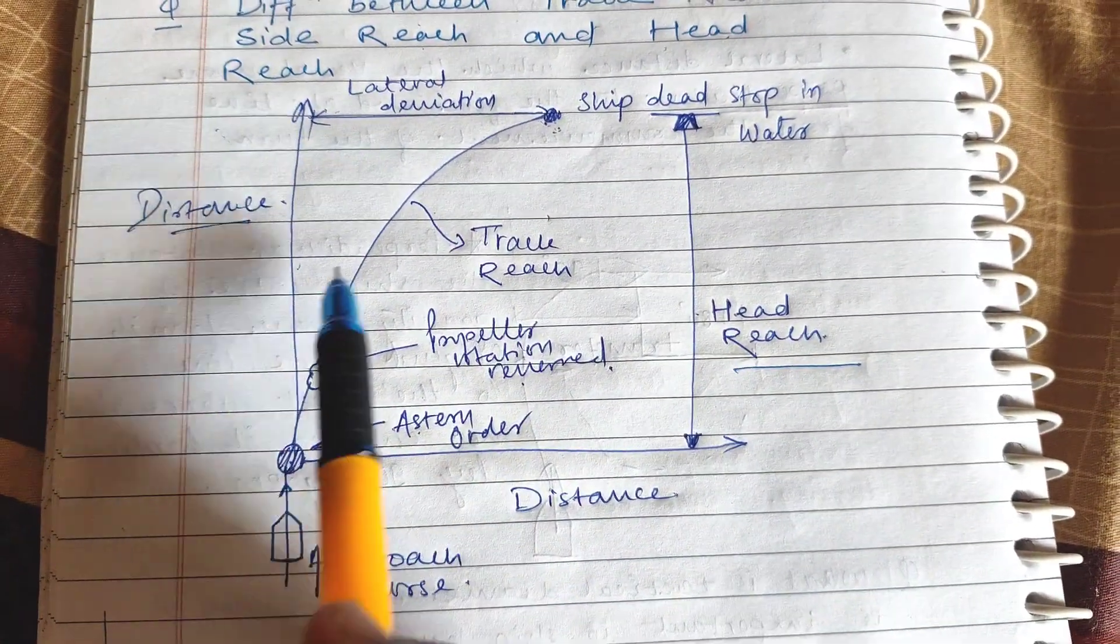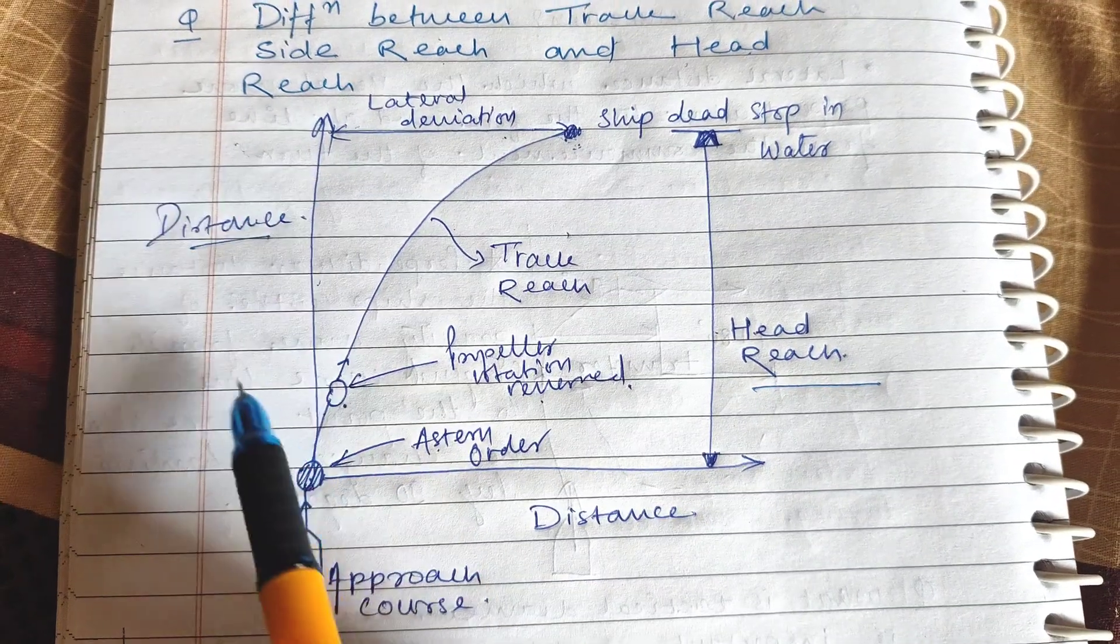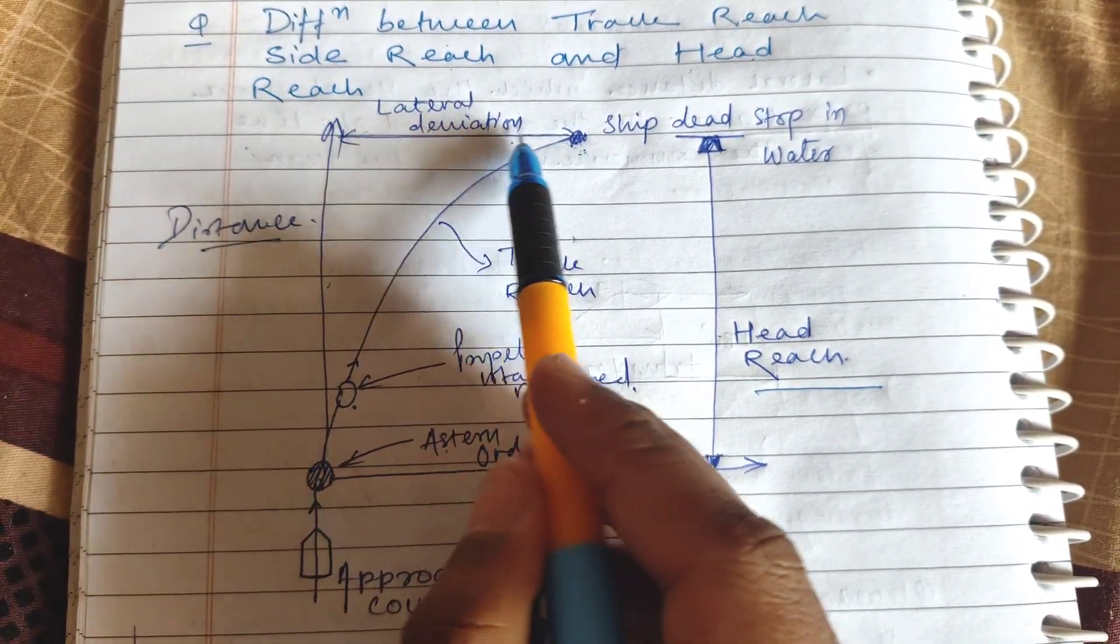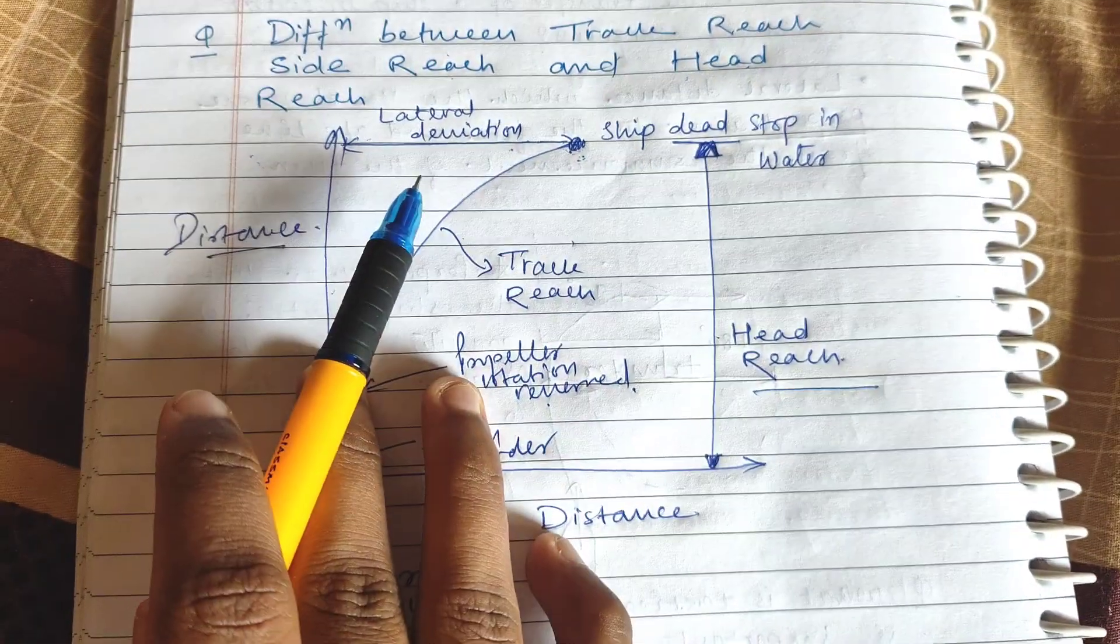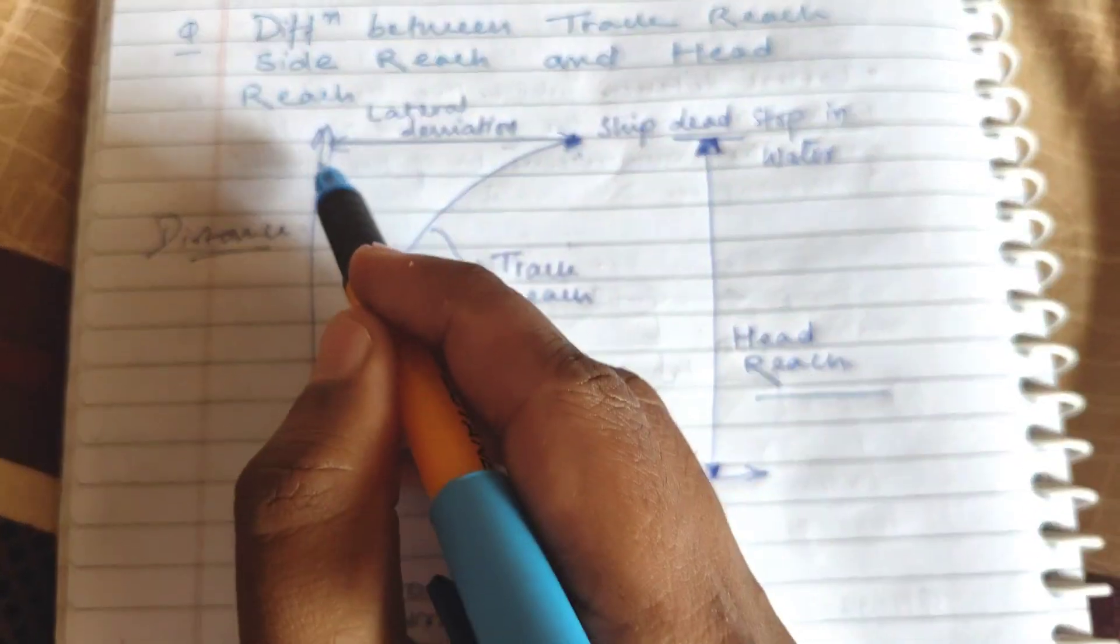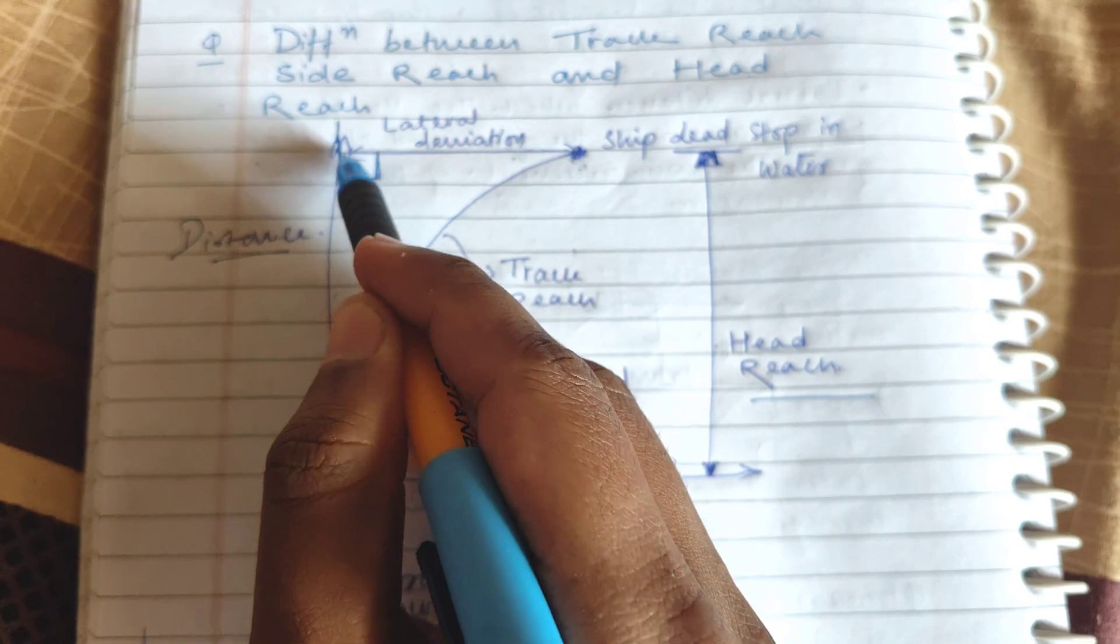Side reach is the lateral deviation from the original course. This is the original course and this is the final point. This lateral deviation is known as side reach, and it is perpendicular to the original course.